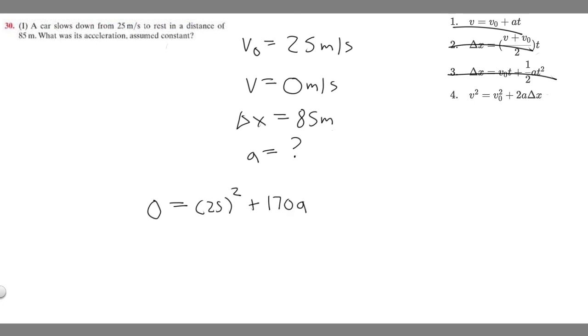So now all we've got to do is solve for a. So 25 squared is the same thing as 625. If we minus—so this is going to be 625. If we minus it to the other side, we're going to get minus 625 is equal to 170a. And so to get a by itself, we divide by 170.